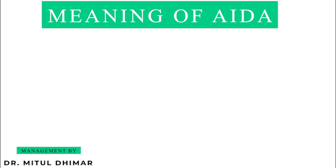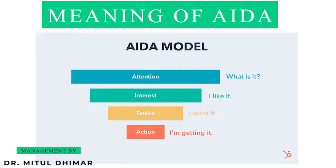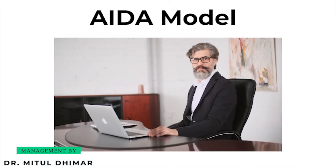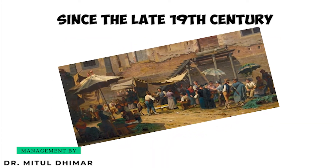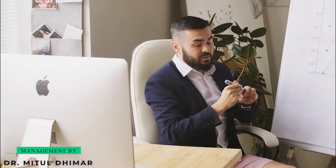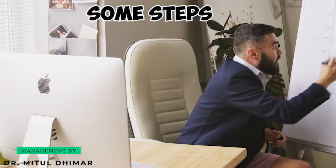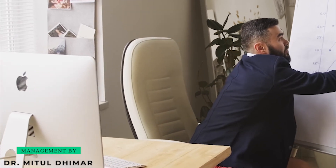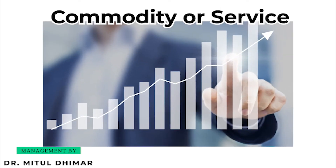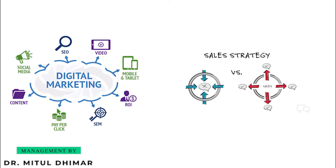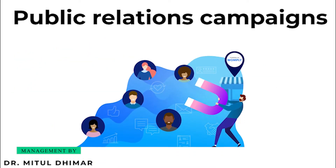First, let us understand the meaning of AIDA. AIDA stands for Attention, Interest, Desire, and Action. The AIDA model was developed by an American businessman and has been in use since the late 19th century. The model generally contains steps that help the owner of a firm to make the sale of his commodity or service. It is generally used in digital marketing, sales strategies, and public relations campaigns.